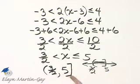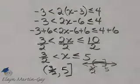So all numbers between these two numbers are solutions. Also, 5 is a solution because of the bracket. 3 halves is not a solution because of the parenthesis.